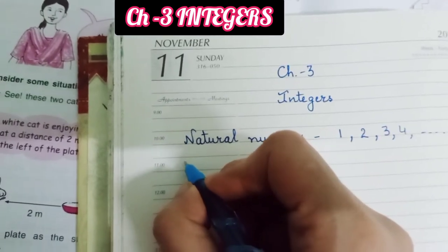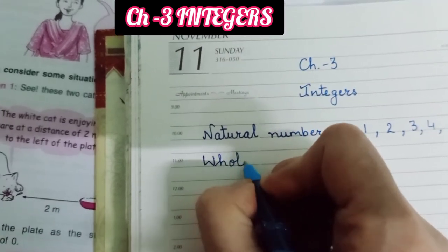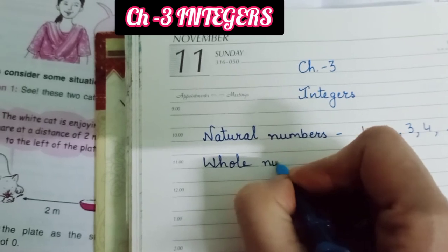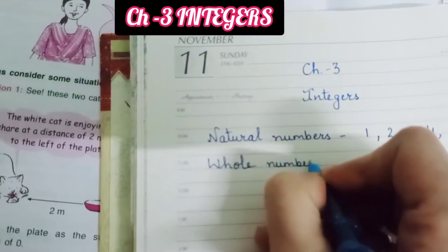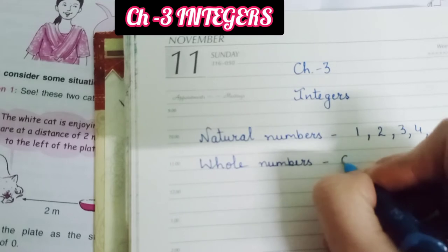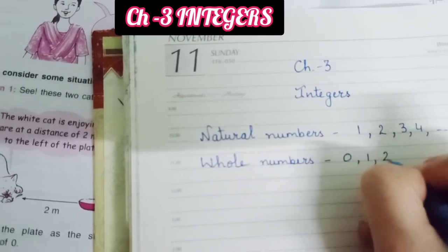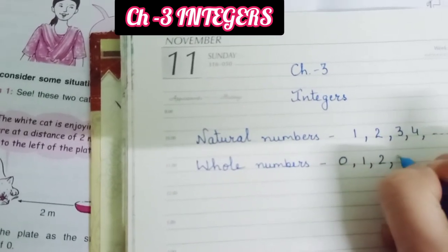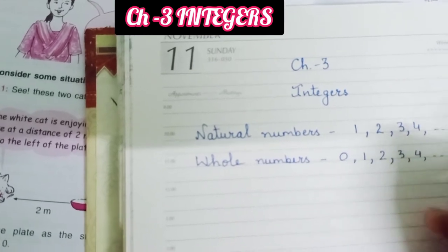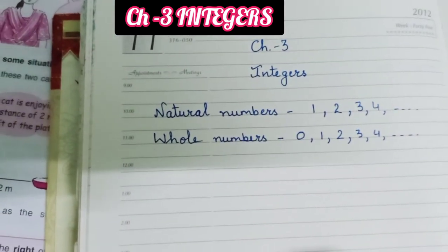We also know about whole numbers. Whole numbers are natural numbers starting from 0, including 0. So 0, 1, 2, 3 up to infinity — that is whole numbers.